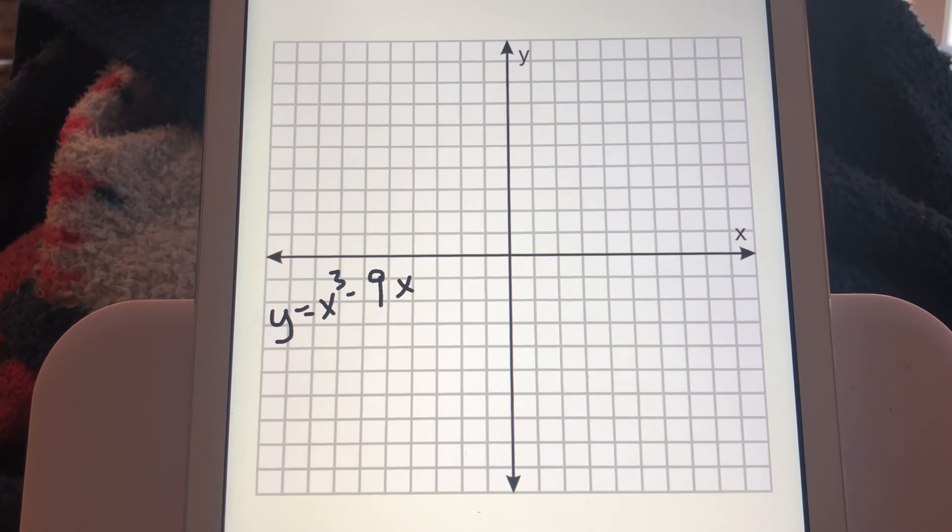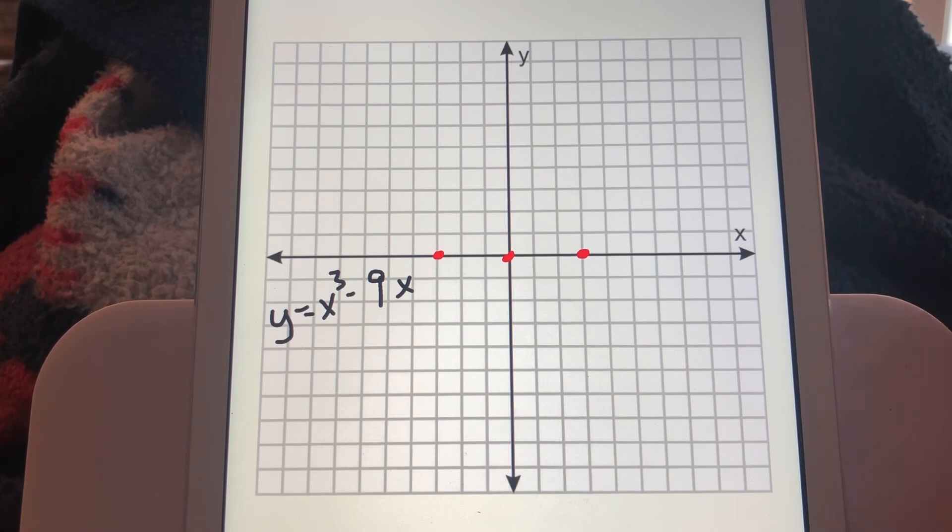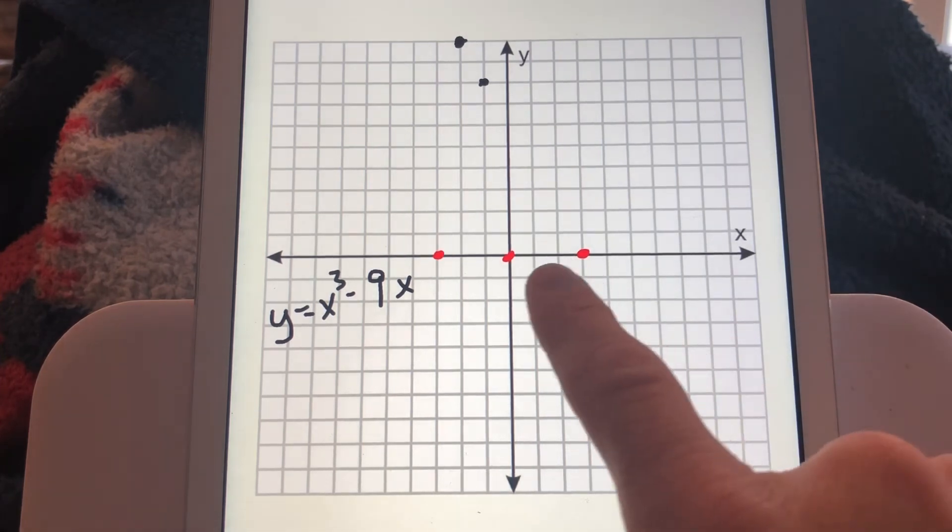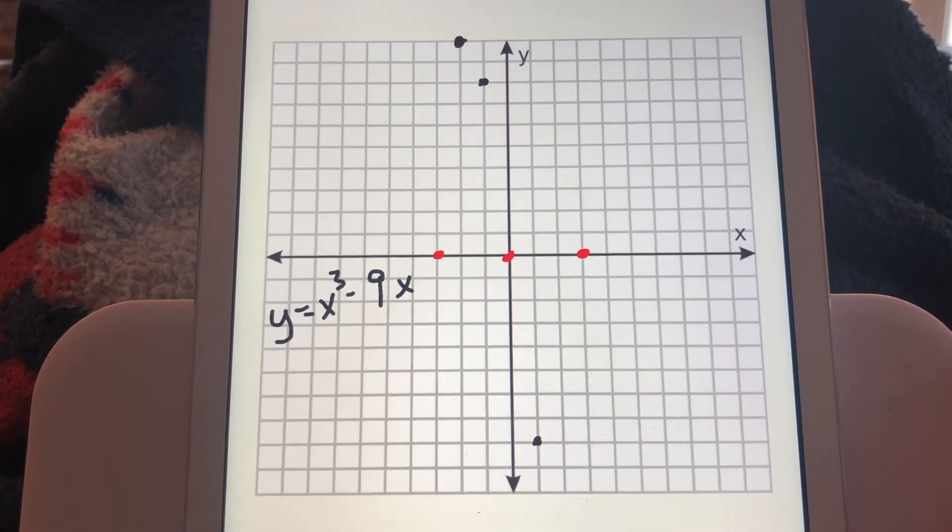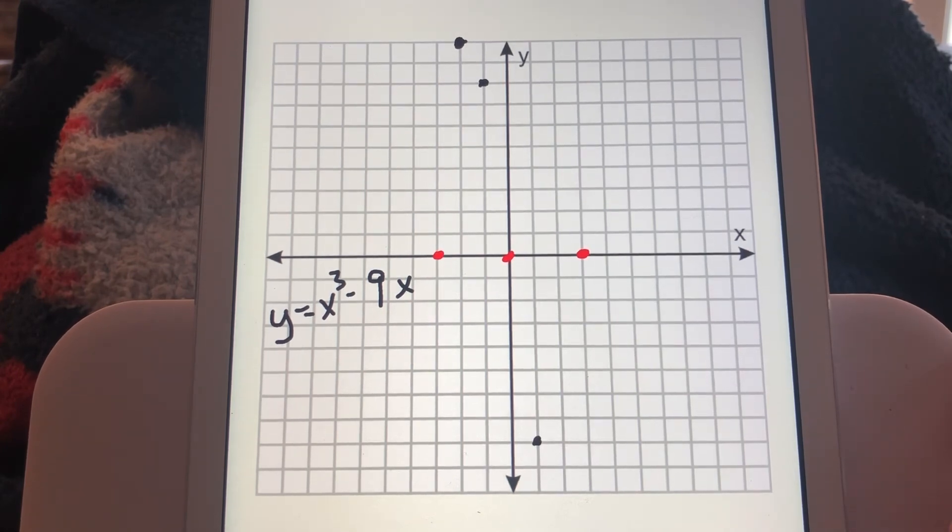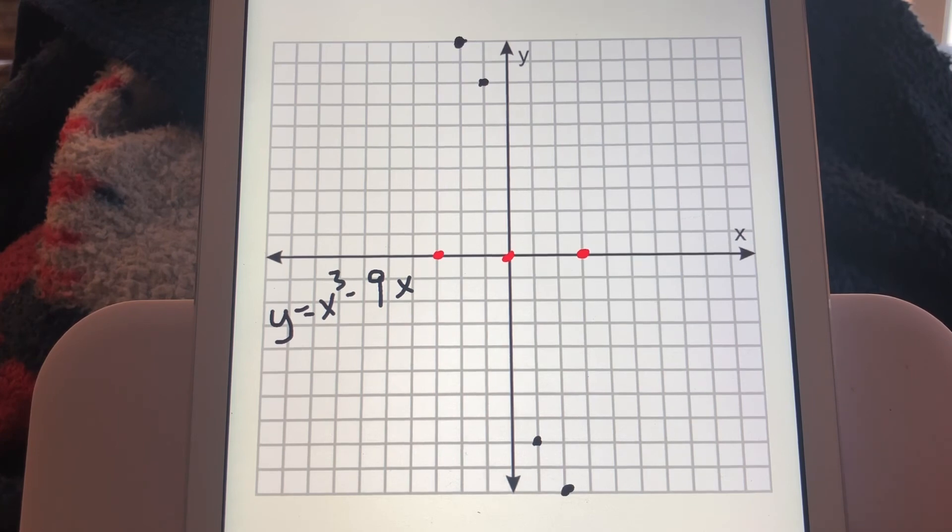All right, so let's draw this graph again. Then we had our x-intercepts at negative 3, at 0, and at positive 3. So I'm going to go ahead and plot those first. Then we had our points that we found by plugging into the original equation and then using symmetry. So my first point I found was negative 2 comma 10, it's up there at the top of the graph. Then we had negative 1 positive 8. And then we used origin symmetry to find those two points in between these two intercepts. So at positive 1, negative 8, and then at positive 2, negative 10. And you can see that origin symmetry there.